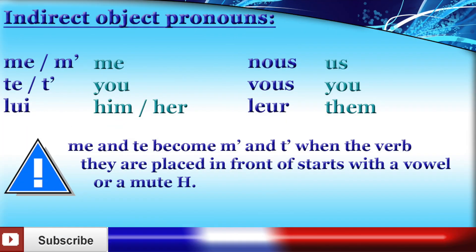The indirect object pronouns are listed here. Please bear in mind that me and te become m' and t' when the verb they are placed in front of starts with a vowel or a mute h.